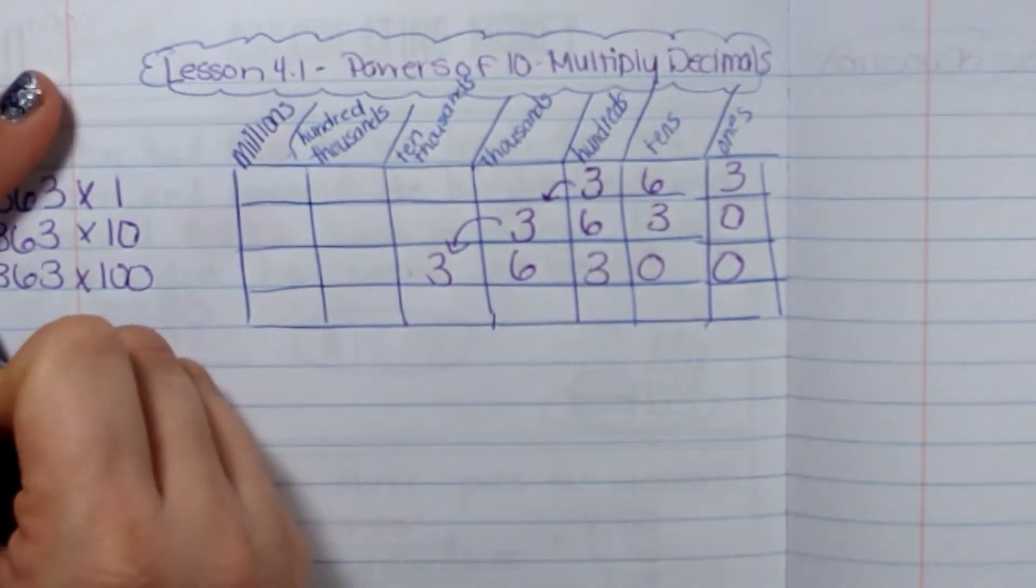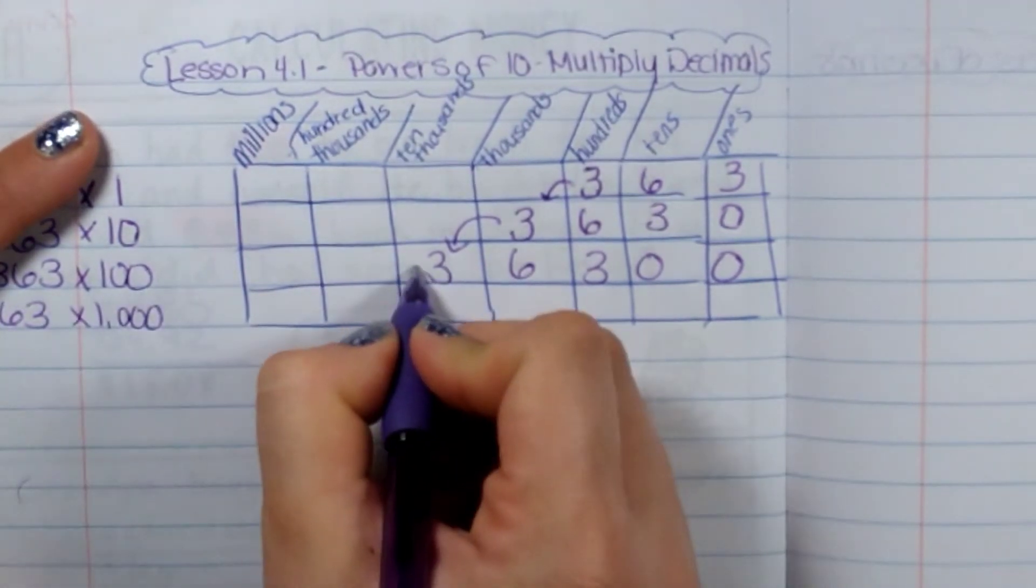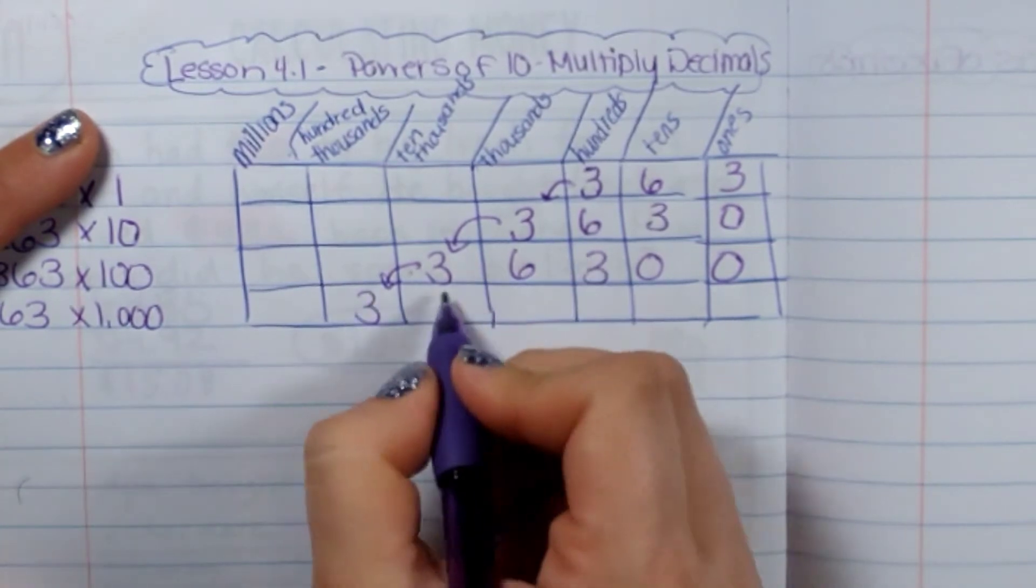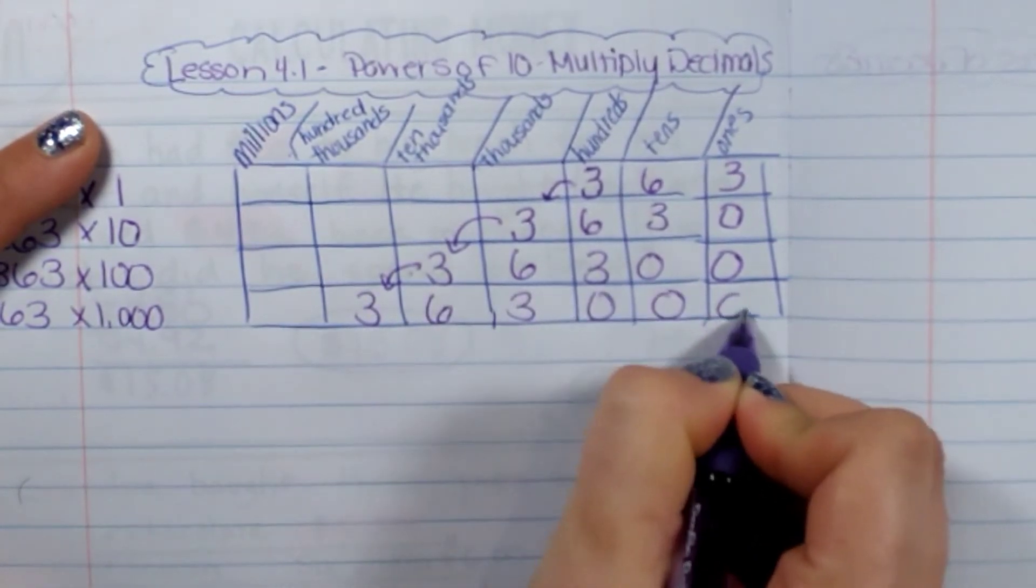Now, if I was to do three hundred sixty-three times one thousand or ten to the third power, I would do it again. Three, six, three, zero, zero, zero.